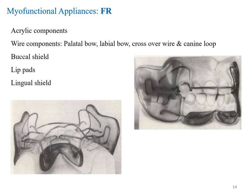We will go into a little more detail about the different components making up a function regulator, speaking only about the basic components. There are acrylic components and wire components. The wire components include a palatal bow, labial bow, crossover wire, canine loop, buccal shield, lip pads, and lingual shield. These are common components across several of these appliances and comprise the basic building blocks.